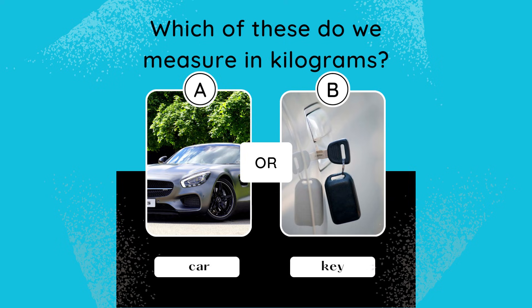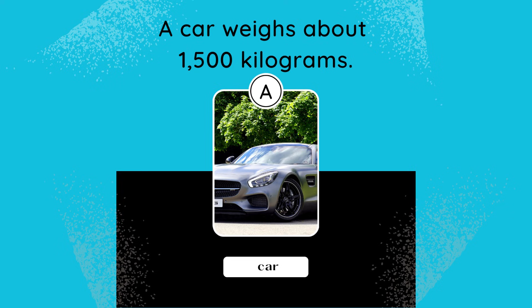Which of these do we measure in kilograms? A. Car, or B. Key? The answer is A. Car. A car weighs about 1,500 kilograms.